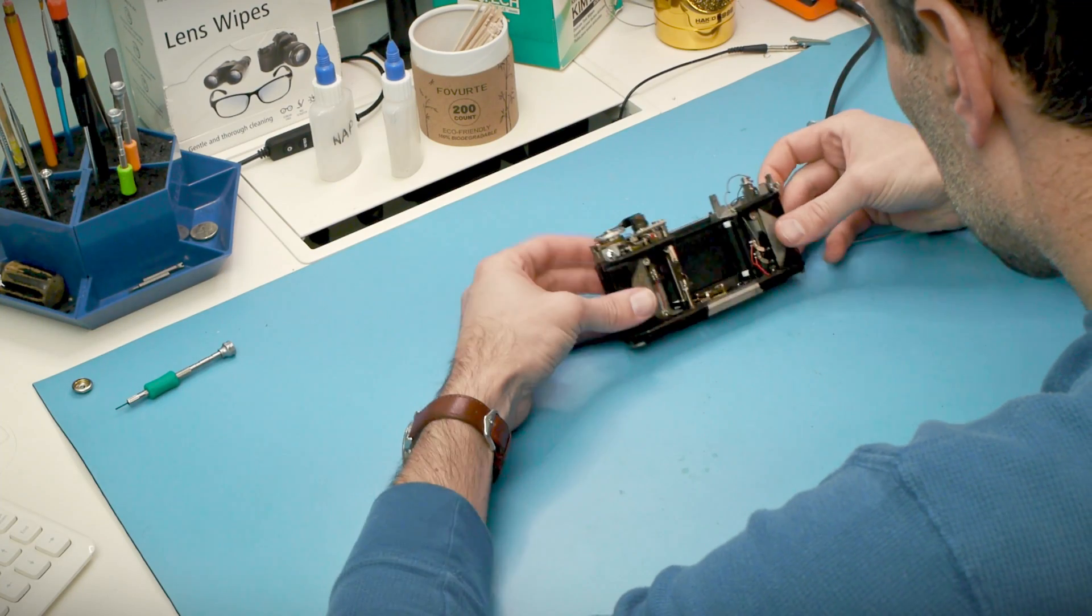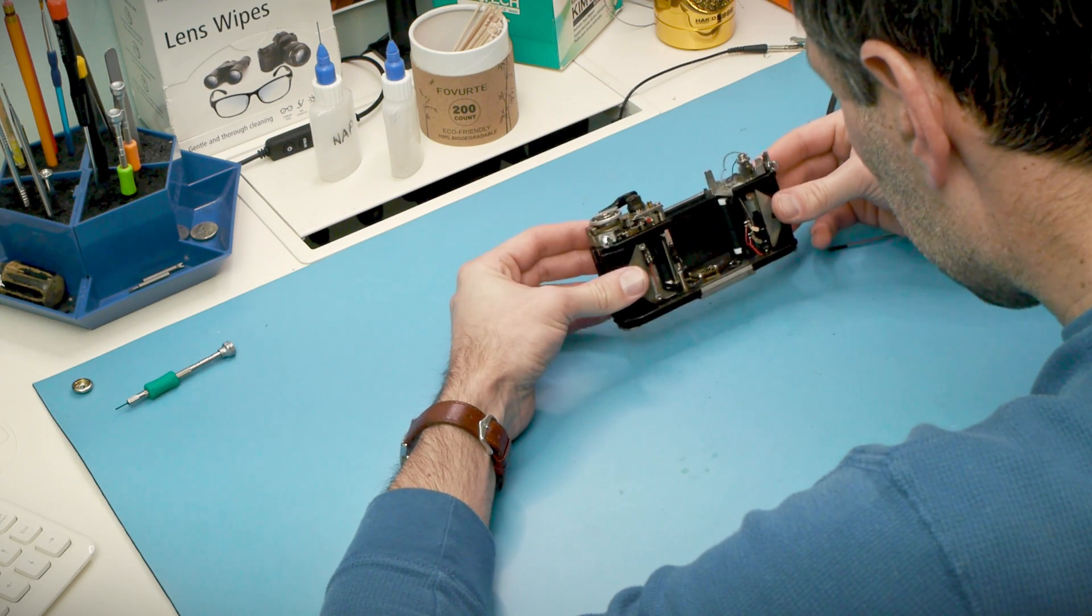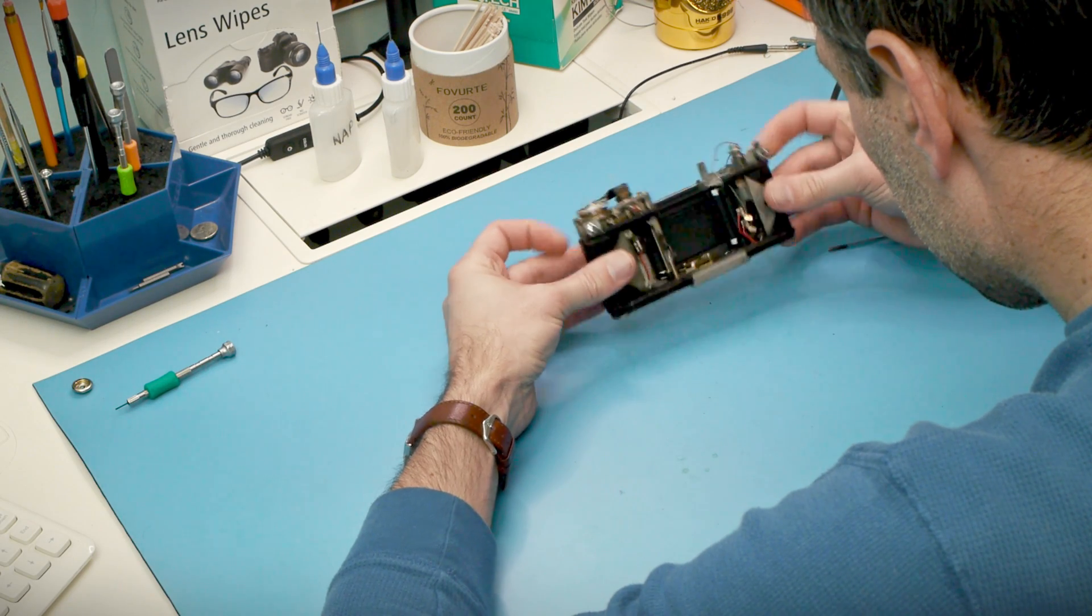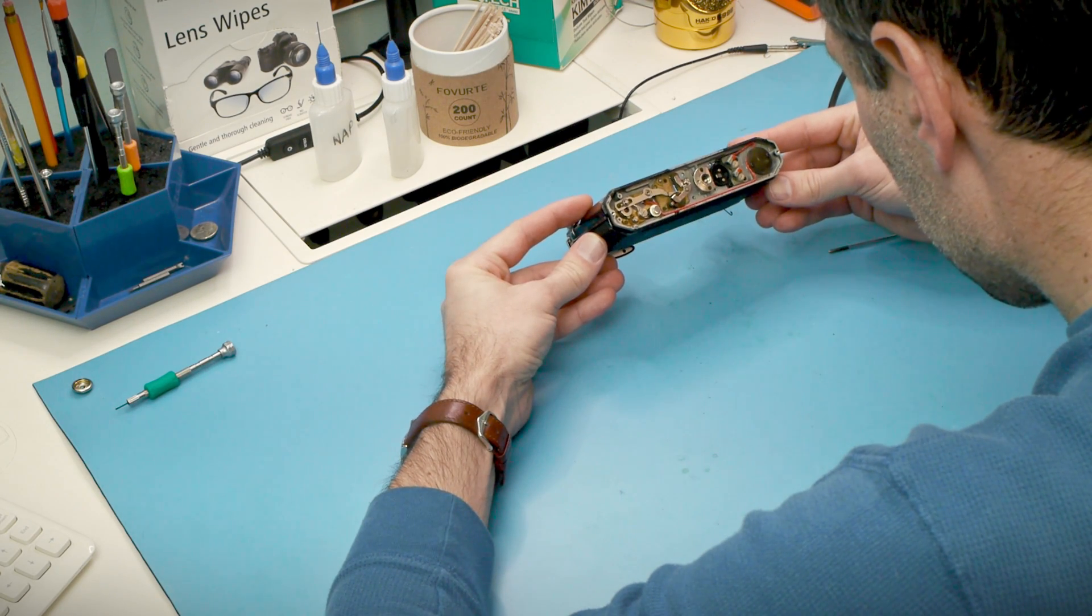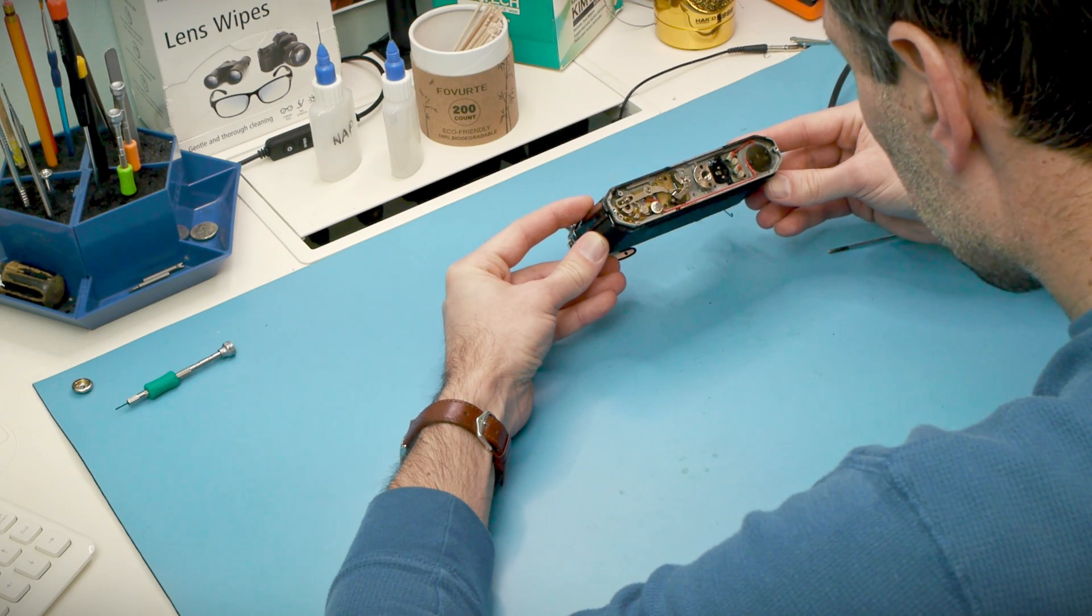But so far, there are no major surprises to report. In the next video, I'll service the mirror box, which means I'll be disassembling and cleaning all of the latching mechanisms on the side. And I'll also remove all of the old foam around the prism and the focusing screen and replace it with new material. See you then.